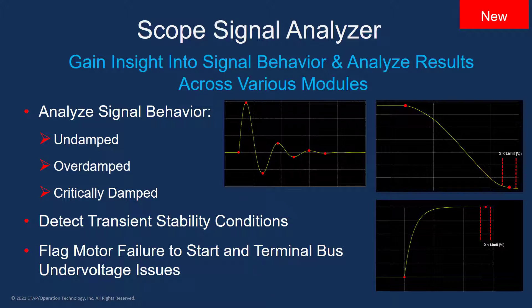This solution also allows you to automatically compare motor starting and transient stability motor acceleration plots, and flag which locations do not meet the minimum starting voltage criteria or which motors potentially fail to start. This solution adds another alternative to the rich ETAP family of plot analysis solutions.